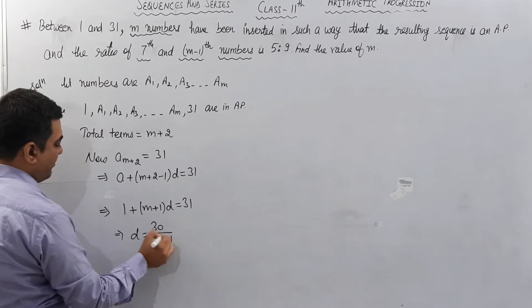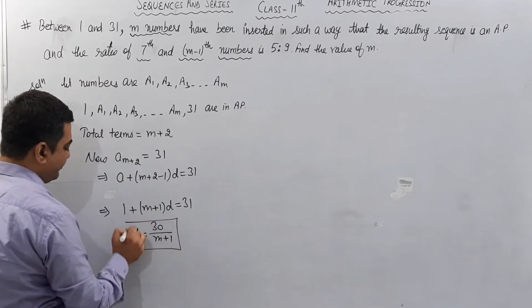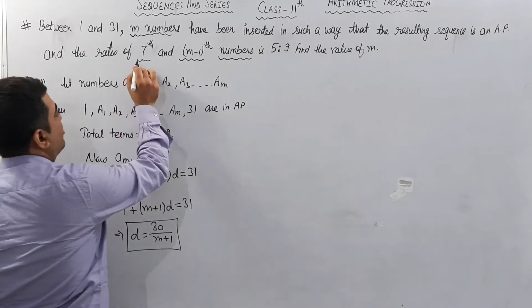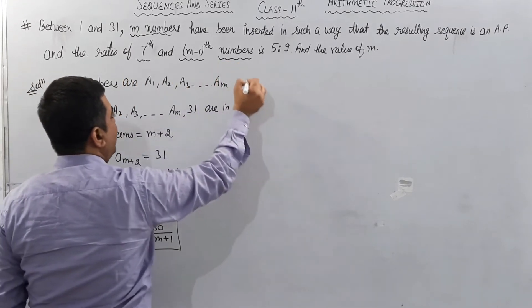Then value of d is (31-1) equals 30 upon (m+1). This is d here.